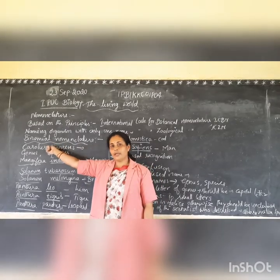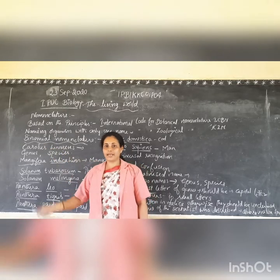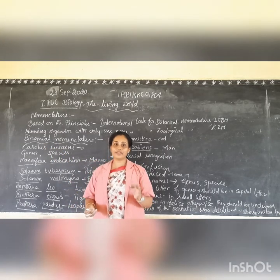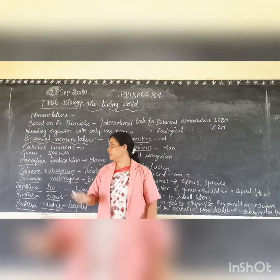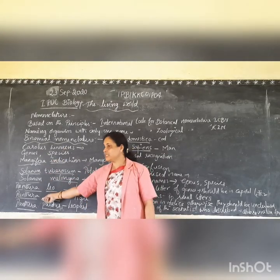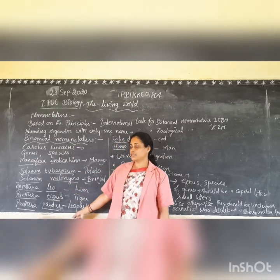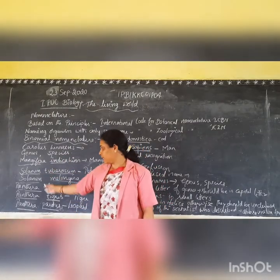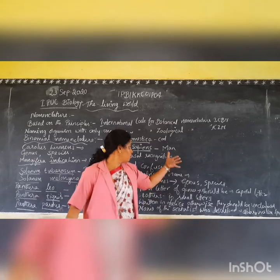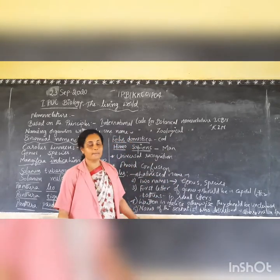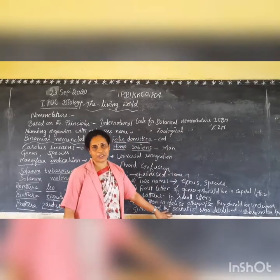Anyway, binomial nomenclature is a scientific method of naming organisms with two words or two names. The first name is the name of genus and the second name is the name of species. If asked in an exam, write the rules of binomial nomenclature, or write the full form of ICBN or ICZN.